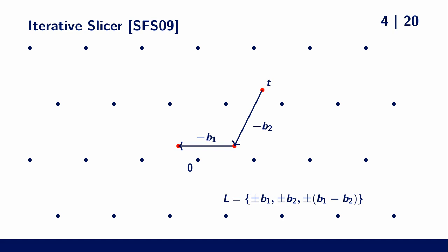After this reduction, we hopefully found the shortest coset representative of the target, which results in finding the closest lattice point.